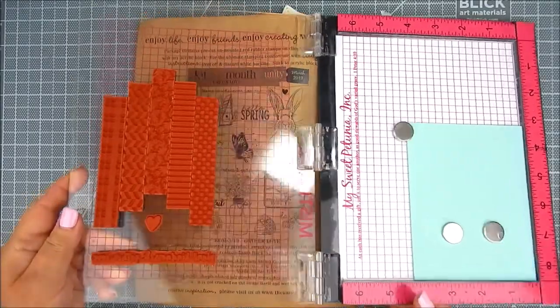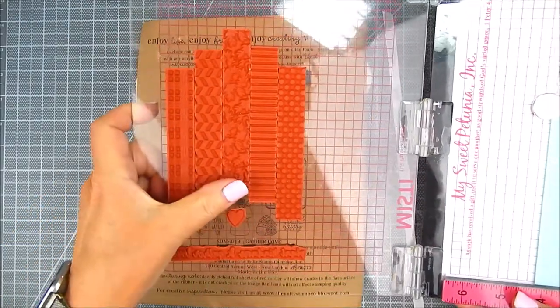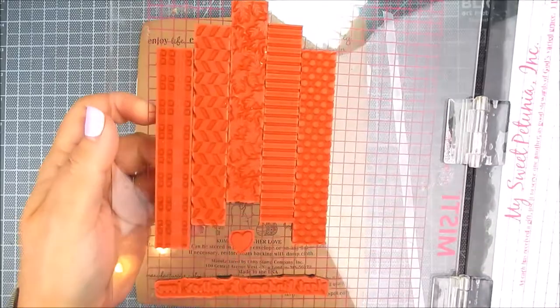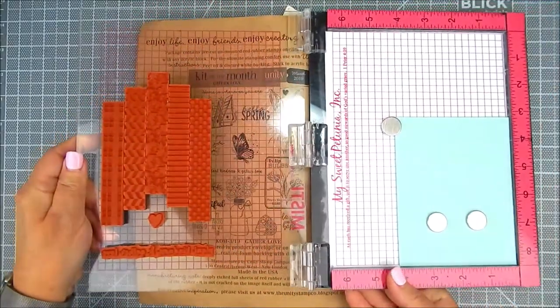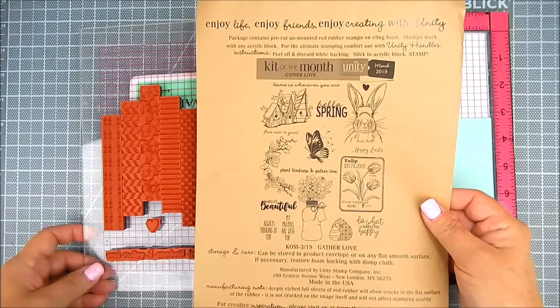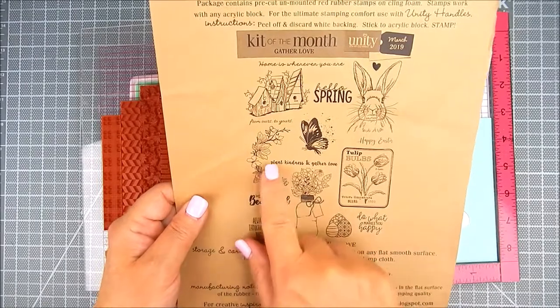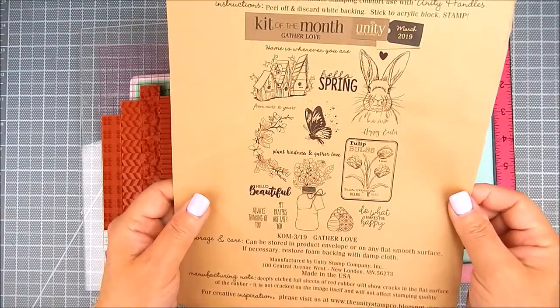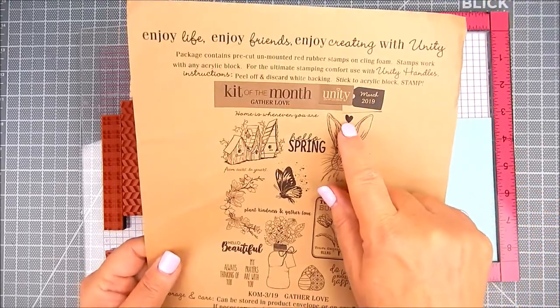I'm using stamps by Ann Butler designs with Unity, and this set is background builders strips set one and strips set two. Also I'm using gather love stamp set, the March 2019 kit of the month. I'm using the sentiment and the heart out of that kit.